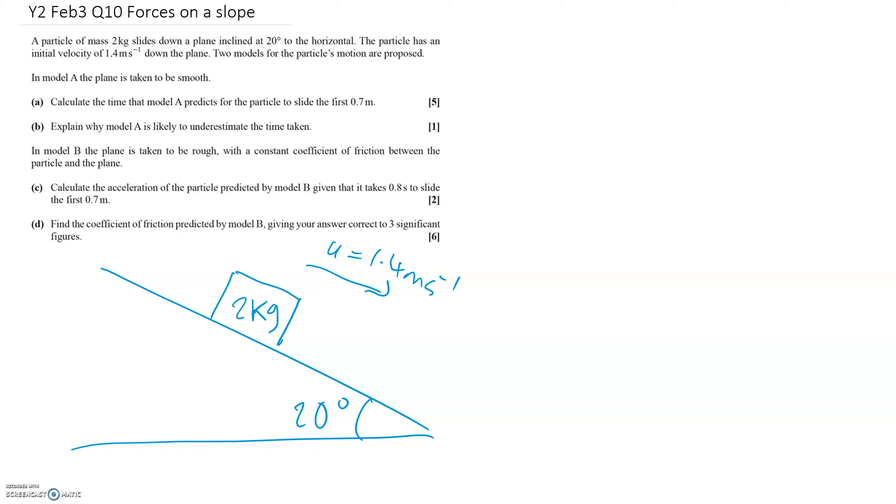We're marking all the forces. We've got 2g as its weight, and then we'll need to resolve in a minute. We'll also have a normal contact force R here. This will be 2g cos 20 over here, and this will be 2g sin 20 there.